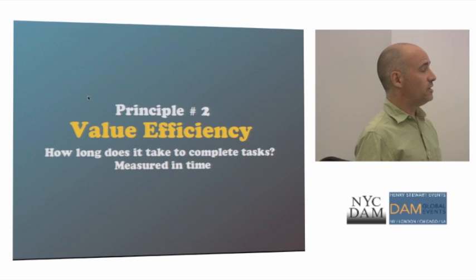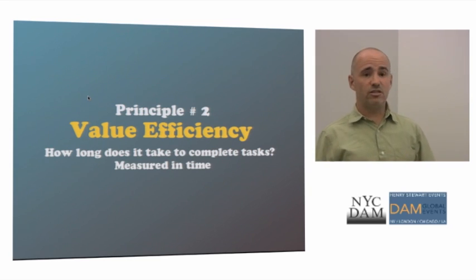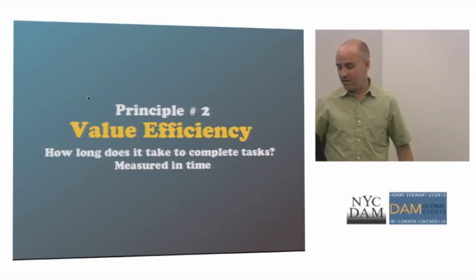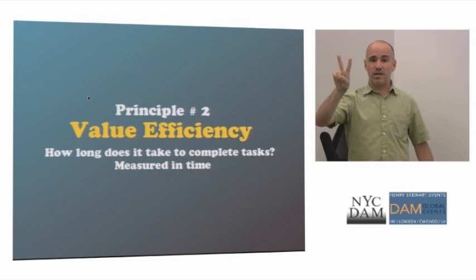The second principle is efficiency — how long does it take to complete a task or multiple tasks? This is measured in time. This is where things begin to break down. When I was coming in here there were some problems at the door, which may have affected some people's efficiency getting in. So when we start talking about efficiency in design, things start to fragment. What's efficient for you might not be efficient for me. We're interested in not only can people complete things, but can they do them efficiently?